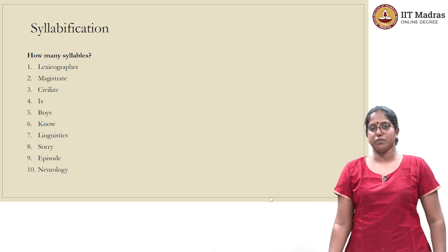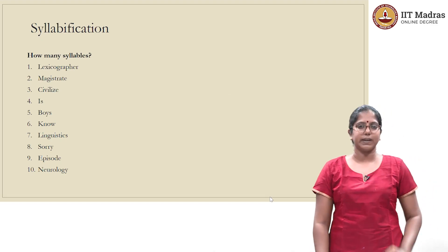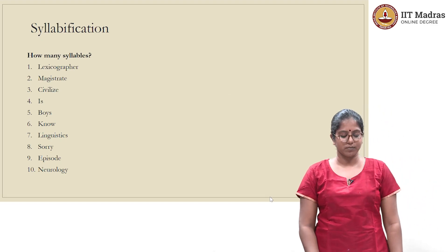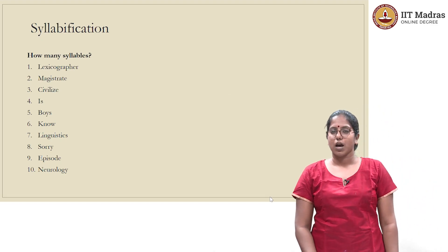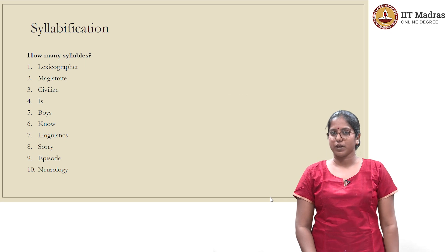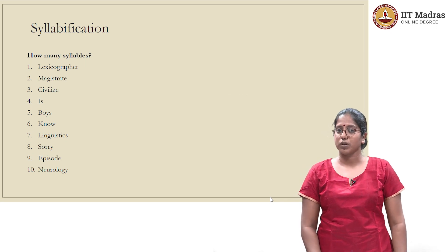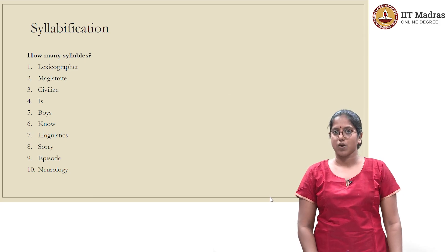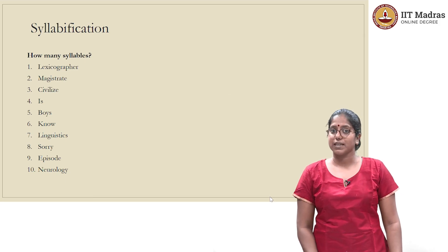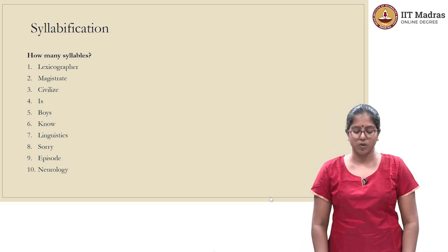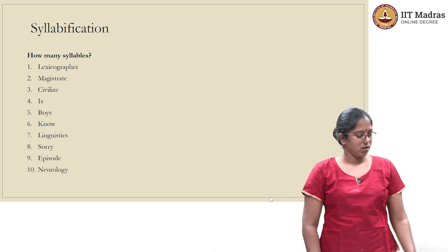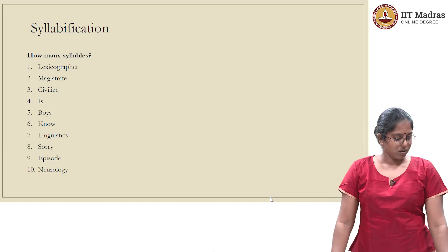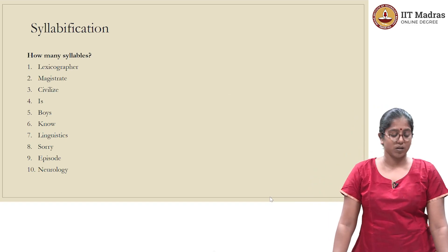Before you pause the video, let me give you a small tip on how to do syllabification. Make sure that every syllable has one vowel, and also make sure that every syllable has only one vowel. Now you may pause the video and work on these questions. Once you are done, we will look at the answers.